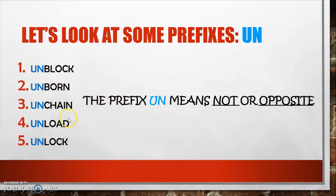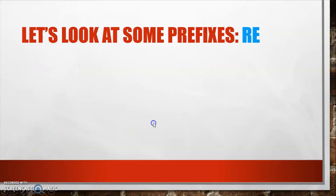What do you think 'un' means? The prefix 'un' means 'not' or 'opposite.' When we attach it to words, it changes their meaning to the opposite. For example, 'unborn' means not born. 'Unlock' means the opposite of locked — to open. Let's look at some more prefixes.